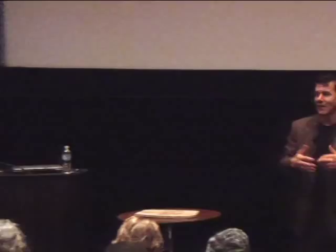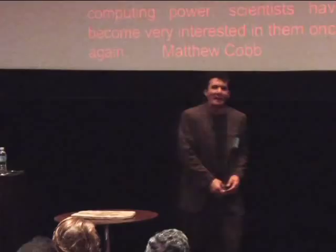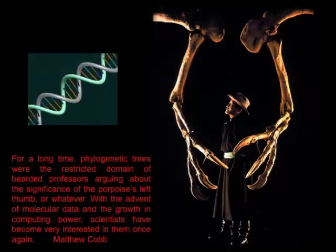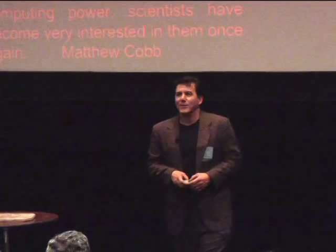Darwin took us a long way there, but what the philosophers of history have called 'narrative' is what Darwin, in a beautiful and elegant way, took us in phylogenetic theory. I'd like to take you through a little bit of that. Some of it is new in the sense that I've published it fairly recently, so critique is welcome. For a long time, phylogenetic trees were the restricted domain of bearded professors arguing about significance of the porpoise's left thumb or whatever. With the advent of molecular data and the growth of computing power, scientists have become very interested in them once again.